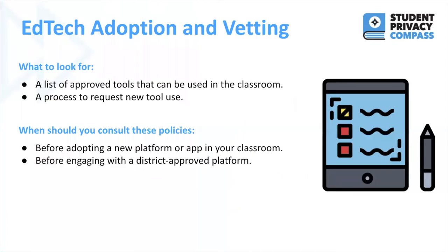The first we're going to discuss are school policies around adopting new tech and other app products into your classroom. Your school might already have a list of vetted tools and a process to request new tools before introducing a new app or platform to your classroom. These policies and processes ensure that the tool is aligned with student privacy laws, has sufficient privacy protections, is secure for classroom use, and has a proper contract in place. You'll want to consult these policies before introducing any new tech into your classroom or to your students, and before engaging in any district-approved platforms.